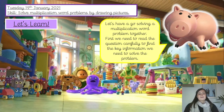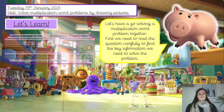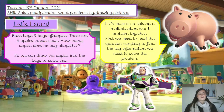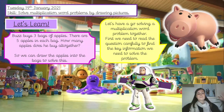Okay, first one then. Let's have a go at solving a multiplication word problem together. You don't need to write anything down — we're just going to talk through it. First, we need to read the question carefully to find the key information. Buzz buys three bags of apples. There are five apples in each bag. How many apples does he buy altogether? We understand the question is asking how many he buys altogether, and we know altogether means the total amount, the biggest number.